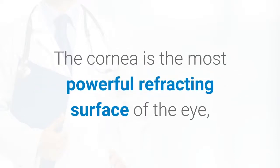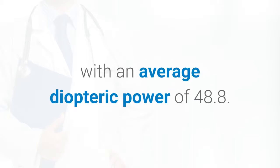The cornea is the most powerful refracting surface of the eye, with an average dioptric power of 48.8.